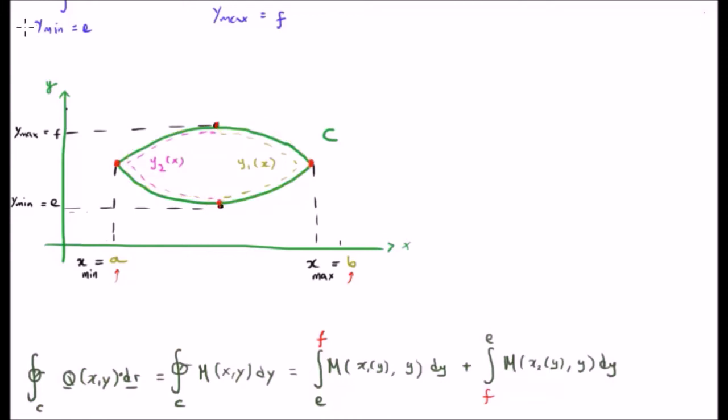So looking at our closed line integral going anti-clockwise, Q dot dr is going to have only a j-hat component, but it's actually going to be dimensionless—or sorry, it's going to have no direction, but the j-hat components will be the only ones that count, so we have M dy. So we have two sections of integral going from e to f and then from f to e.